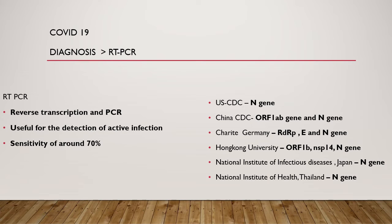Different countries use different gene portions for nucleic acid identification. The US CDC targets the N gene. The China CDC targets the ORF1ab gene and N gene. The German Charité company produces a kit targeting the RdRp gene, E gene, and N gene. Hong Kong University uses ORF1b non-structural protein and N gene. The National Institute of Infectious Disease Japan and National Institute of Health Thailand also use the N gene target for identification.